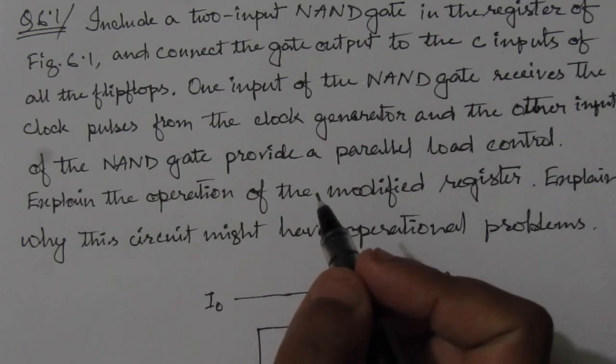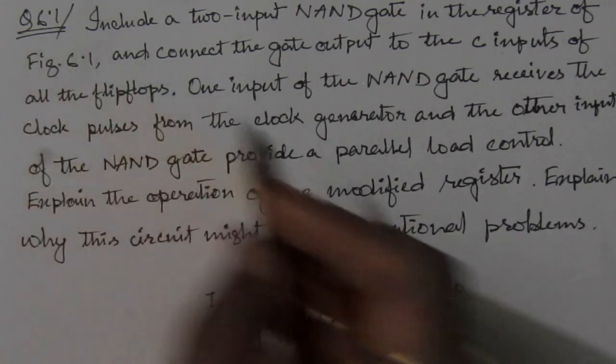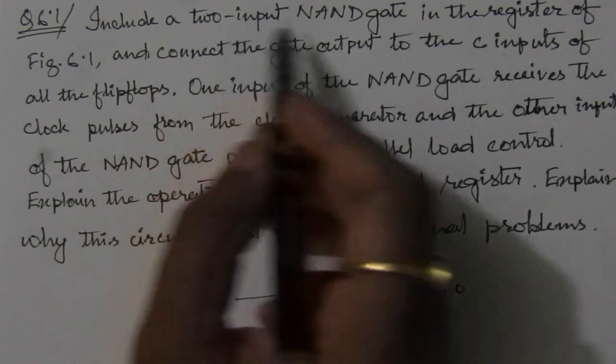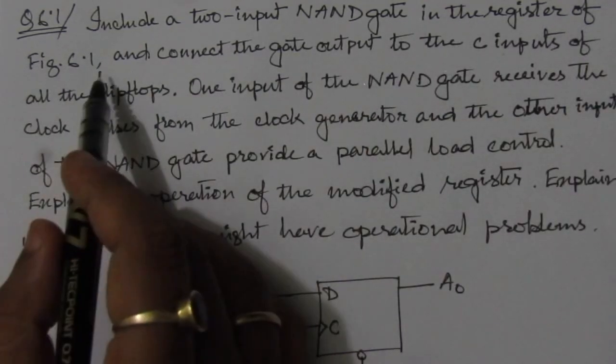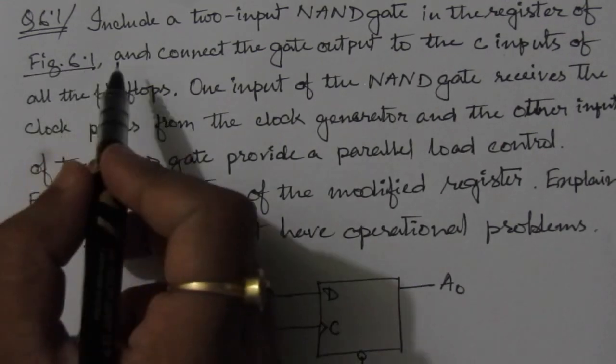So in this video, I am solving problem number 6.1 from chapter number 6. The problem is to include a two-input NAND gate in the register of figure 6.1. This figure is from inside the chapter.